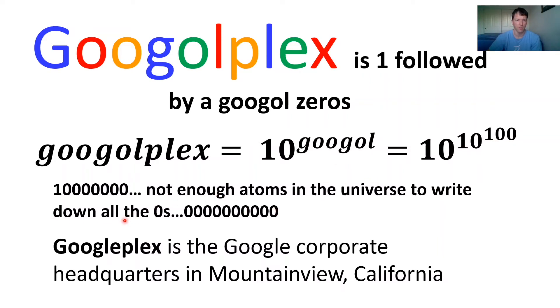There aren't enough atoms in the universe to write it down. But you can write it down compactly like this, and it still means the same thing. You just can't write down all the zeros. And again, the company Google made a play on words of Googleplex. And when you spell it this way, Googleplex is the Google corporate headquarters in Mountain View, California. So we're not talking about the company or their building. We're talking about these numbers.